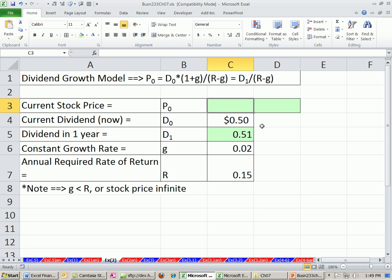So to calculate the price now, our estimate. These are all models that are used to estimate. We take that dividend divided by R, big R, minus little g. And so $3.92. If we see the stock selling for less than this, we're going to buy it. If it's more than this, we're not going to buy it.